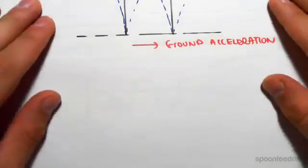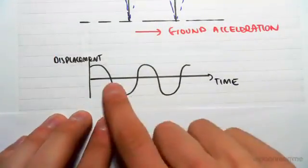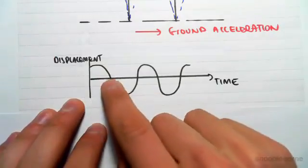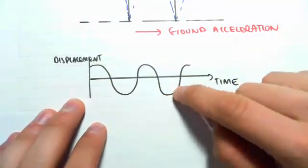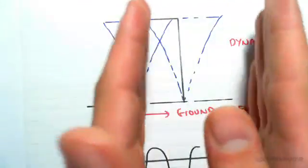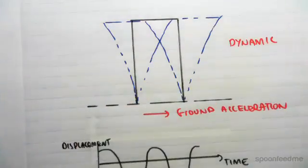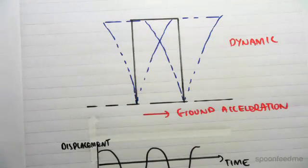If we were to plot this, we would have time against displacement. So the displacement of our structure is going to be some type of sine curve, it's going to sway back and forth like this. Now because it's a dynamic load, it's actually quite complicated to assess and work out.